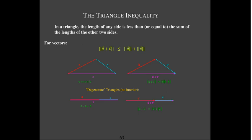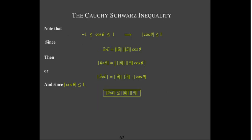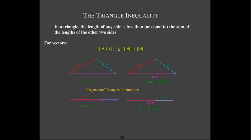Connected to the Cauchy-Schwarz inequality is the triangle inequality. Whereas the Cauchy-Schwarz has the product of the lengths, the triangle inequality has to deal with the sum of the lengths.